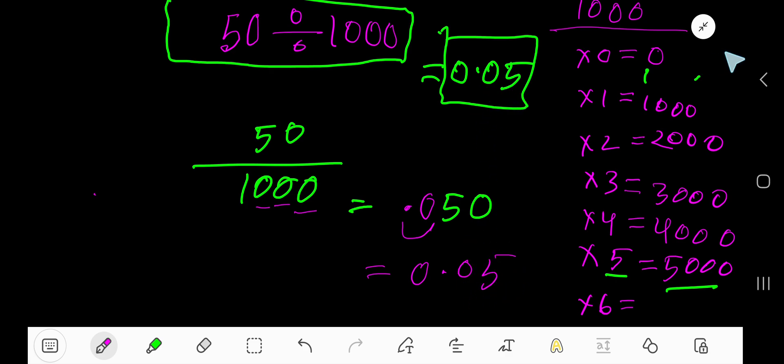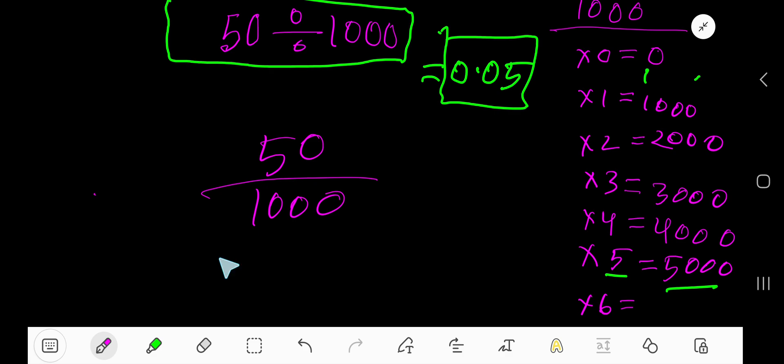Or you can also apply this trick: look, 50 divided by 1000. At first, cancel this zero, this zero. Then apply - here we have two zeros, so decimal point will move two digits, one, two, from right to left. 0.5 is the answer.